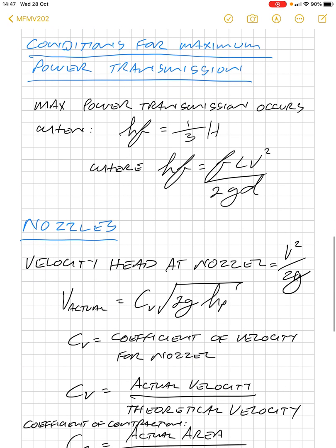So, conditions for maximum power transmission. Our maximum power transmission occurs when the head loss to the friction is one-third of the inlet power.